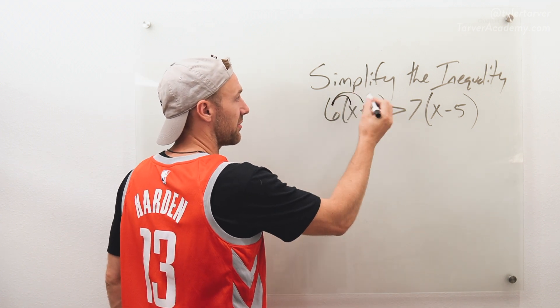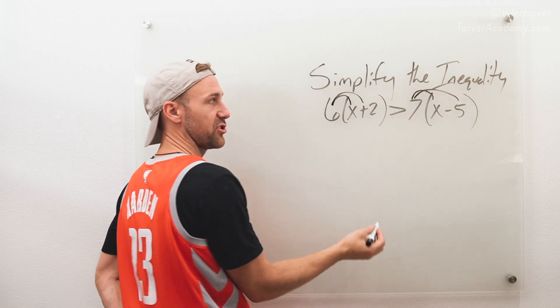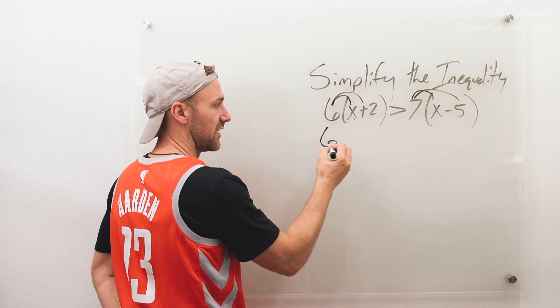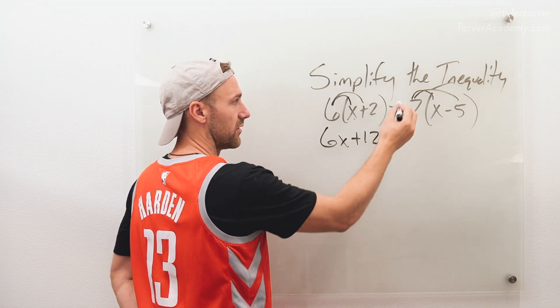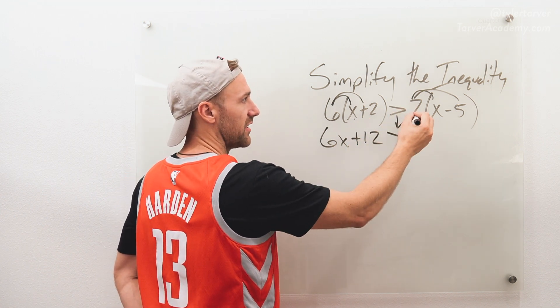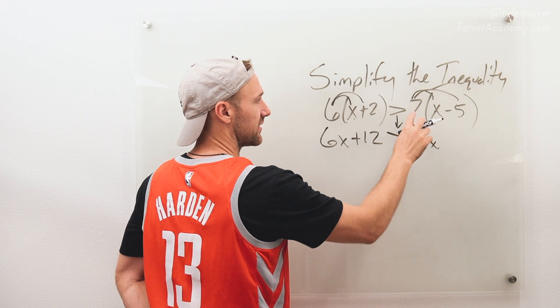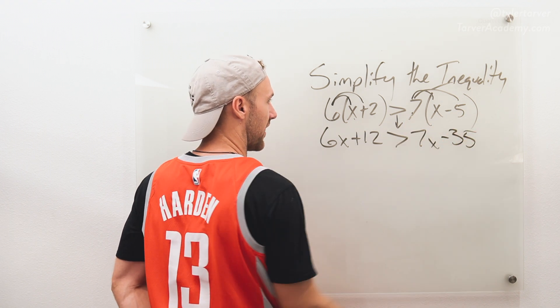So I'm just gonna simplify it by distributing. Six times x is six x. Six times positive two is positive twelve. Bring down my sign. Seven times x is seven x. Seven times negative five is negative thirty-five.